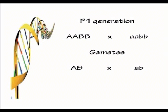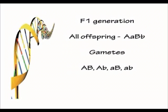When we cross the two members of the P1 generation — big A, big A, big B, big B with little a, little a, little b, little b — we get offspring called the F1 generation. All those offspring are heterozygous for both alleles: big A, little a, big B, little b. Those individuals can make four different types of gametes: big A big B, big A little b, little a big B, and little a little b.